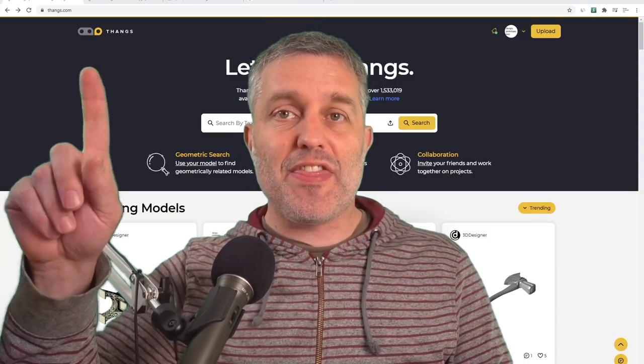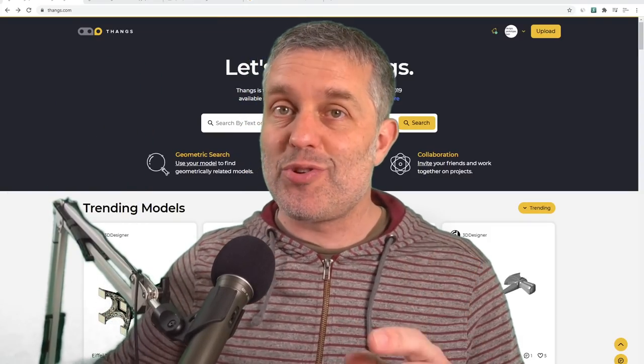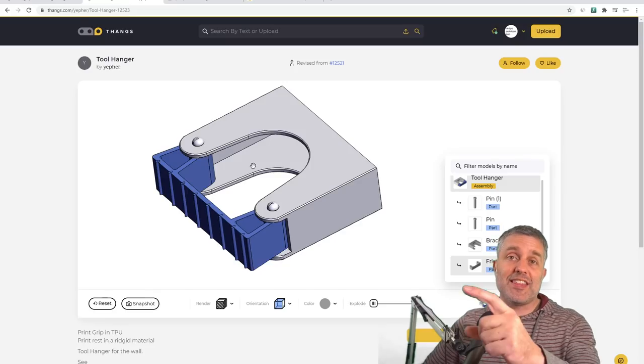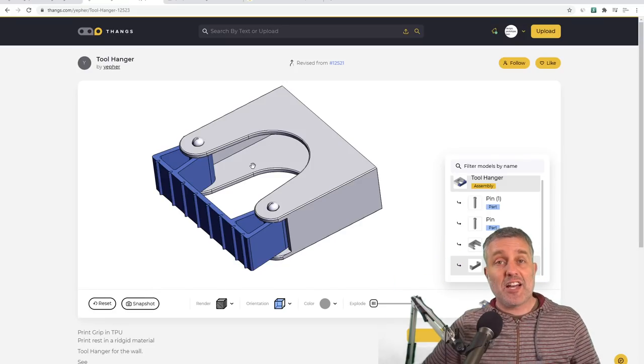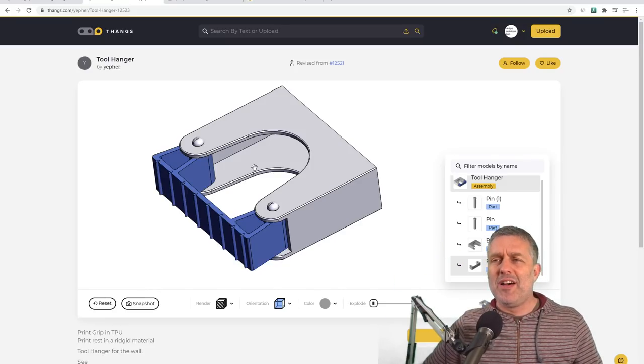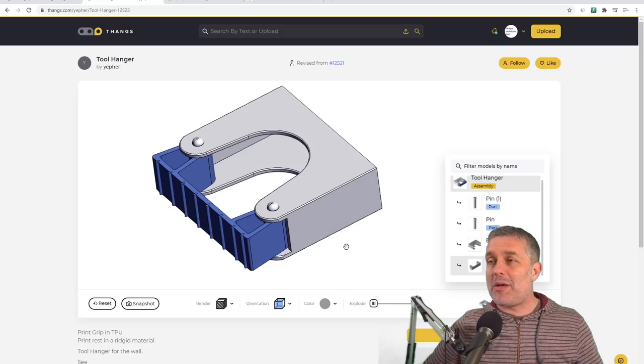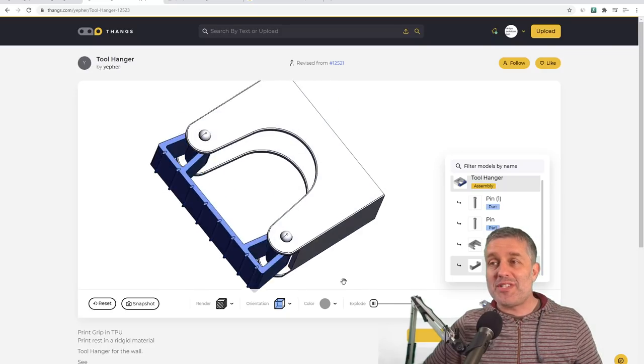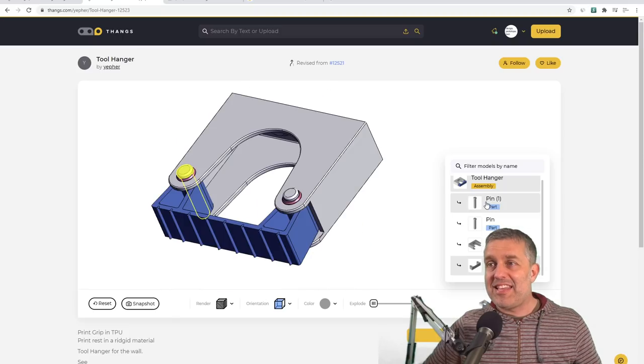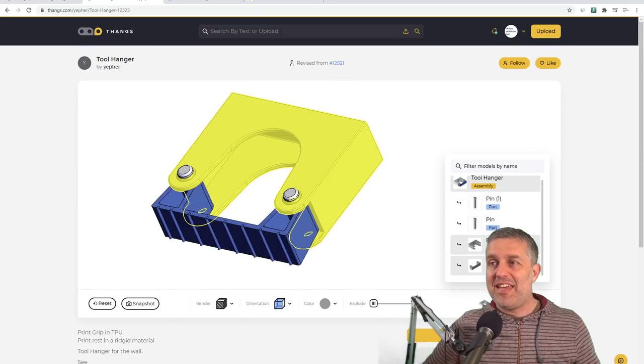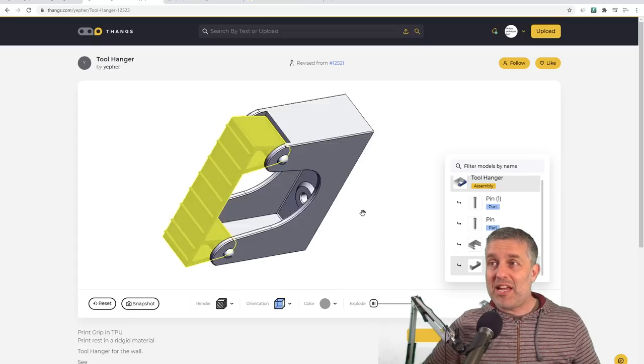I was perusing the THANGS website yesterday and I came across this geometry which obviously has a ton of work put into it. Let's talk about the THANGS website for a second. You can rotate around the models and assemblies here, and as you hover over individual items in the assembly it highlights them in the rotatable model.